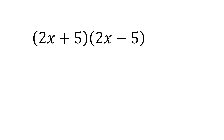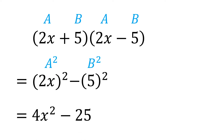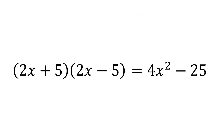Now let's say we have 2x plus 5 times 2x minus 5. In this case, we have a as 2x and b as 5. Now instead of using the FOIL method, just take the square of 2x, then subtract the square of 5, which is equal to 4x squared minus 25. So therefore, 2x plus 5 times 2x minus 5 is equal to 4x squared minus 25.